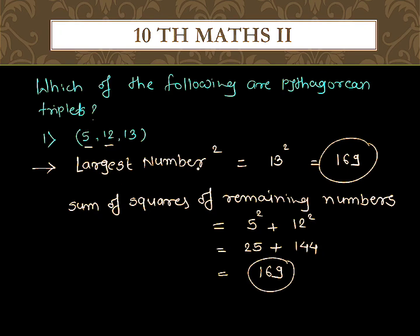So in this case, the largest number squared is equal to the sum of squares of the remaining two numbers. That's why the given triplet is a Pythagorean triplet. Therefore, 5, 12, 13 is a Pythagorean triplet.